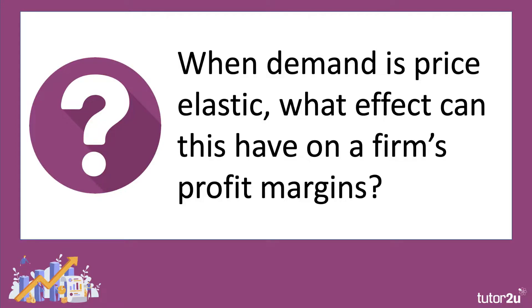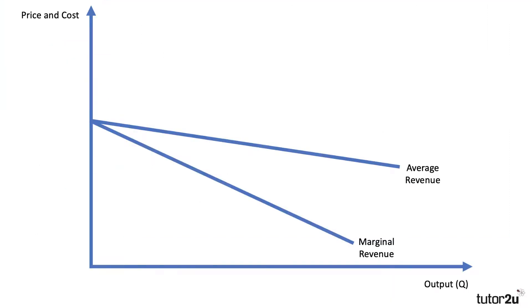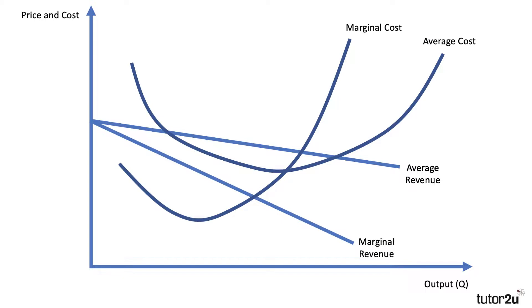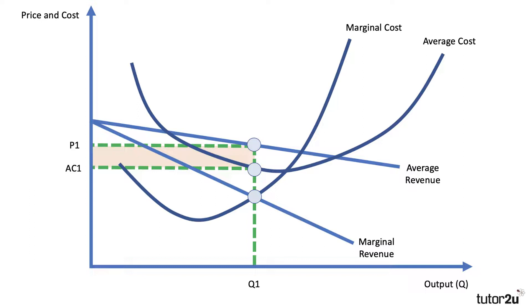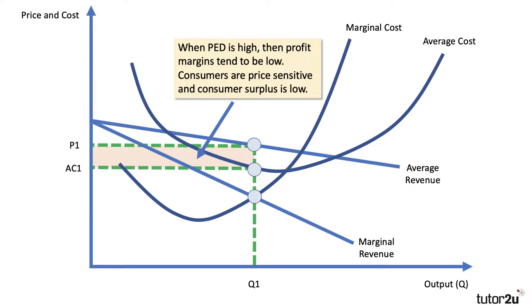Now what about when demand is price elastic — when consumers are sensitive to changes in price? What effect can this have on a firm's profit margins? Here the demand curve and average revenue curve is highly price sensitive, with marginal revenue falling below. With those same cost curves applied, a profit maximizing firm will produce output Q1, charge price P1, and the unit cost is AC1. The extent to which the firm can raise price is lower in this situation. They can make some profit, but the profit margin — the gap between price and cost — is much lower. In these industries, total profit comes not from a high profit per unit but from selling a lot of units — volume sales is where you make your profits.